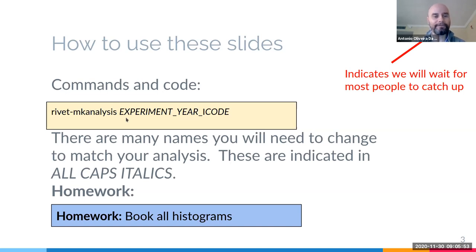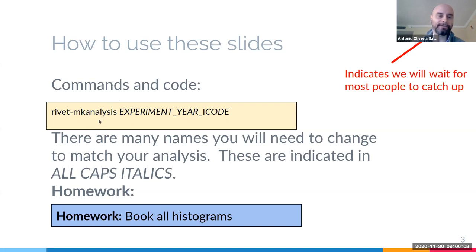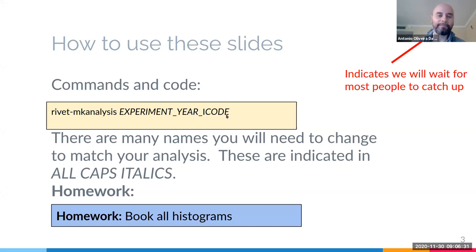About this presentation: in the top right you'll see a pause symbol. Every time we have this in our slides, we're going to pause and wait for everybody to complete the instructions. When you see a yellow box with italics, it means you probably have to replace something according to your analysis — for example, in the command 'rivet-mkanalysis', you replace EXPERIMENT_YEAR_ICODE with your experiment, year of the paper, and the InspireHEP code of your analysis.